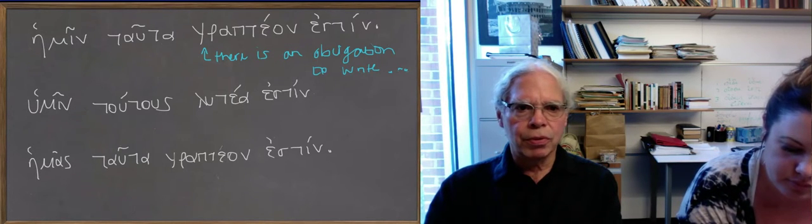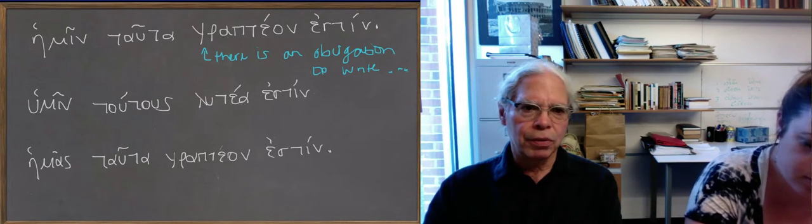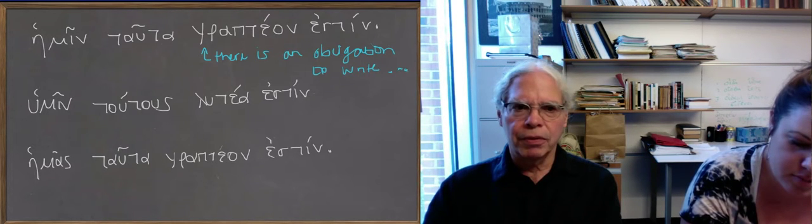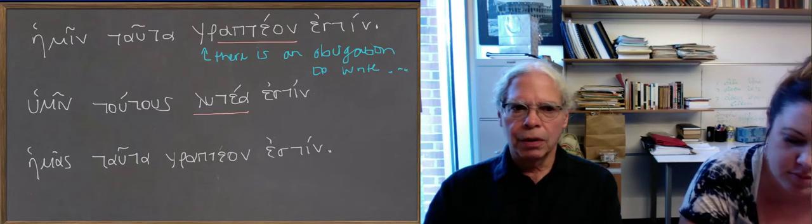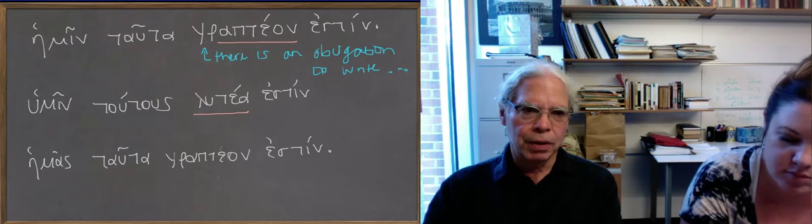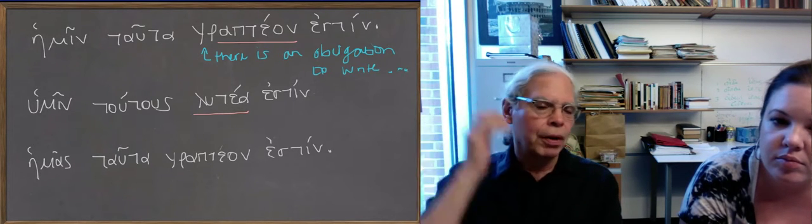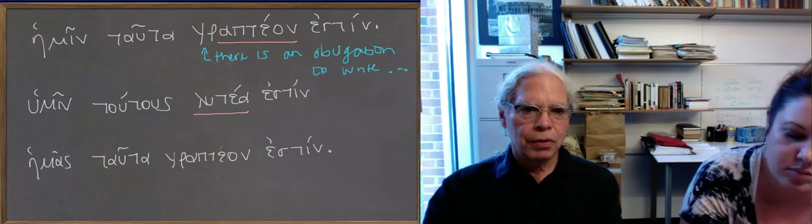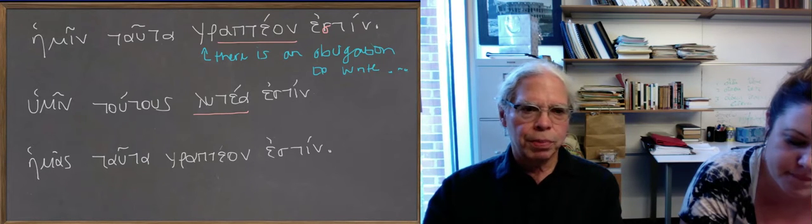And humin tutus lutea estin. What's happened is that we've got, instead of luteon, lutea. You have a fluctuation between the neuter accusative or neuter nominative singular of the verbal adjective, rapteon, and the neuter nominative plural. Notice the verb will remain singular because effectively the estin is agreeing with lutea in some way. But you can see, you see both. So it's not just neuter nominative singular, but neuter nominative plural. So this means there is an obligation on your part, humin, to release these people.